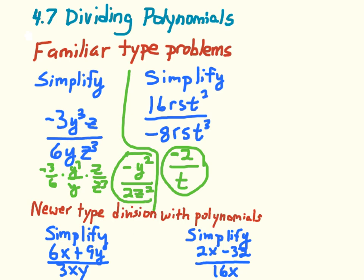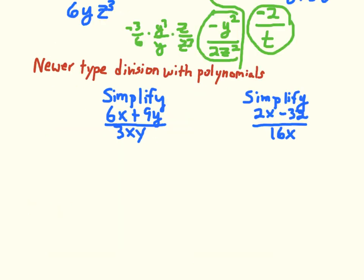Now some newer types of polynomials. The next problems have addition signs separating the terms of the numerator, which is different from the last unit. The first problem is 6x plus 9y, all divided by 3xy. One thing to remember: you cannot cancel when you have addition. For example, 4 plus 7 over 2 equals 11 over 2. You can't cancel the 2 with the 4 because they're not factors — 4 is being added to 7. So you can't cancel a 3 and a 6, or an x and an x, because of the addition sign.